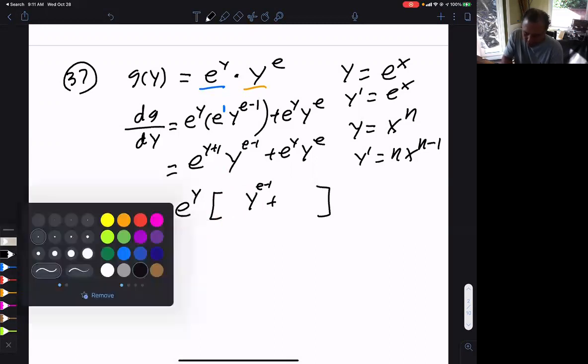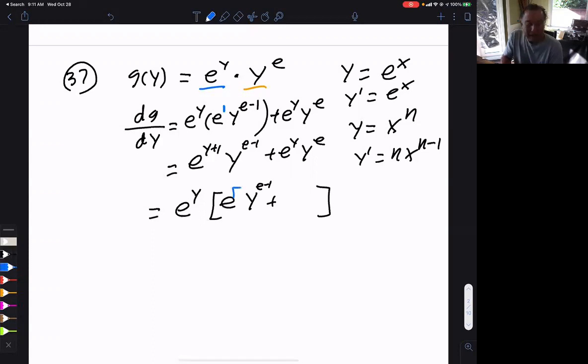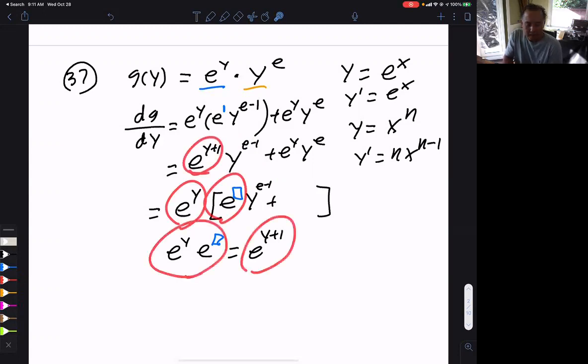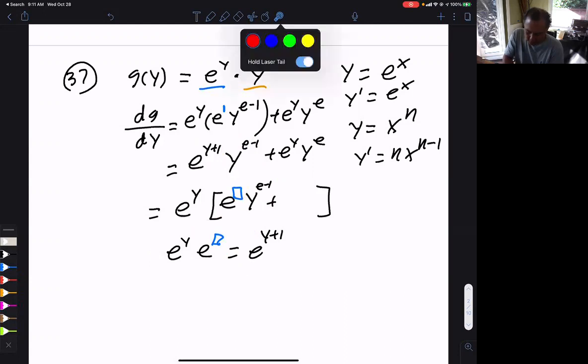But here's a question. I need e to what power? Again, this times this must equal that. Well, that's taken care of. So in other words, e to the y times e to the box must equal e to the y plus 1. That times that must equal that. So those two must equal that. So clearly, what does this box have to be here? Show me with your hands. 1. Because you add exponents, right? So that needs to be 1. So that's going to be a first power there. And we can double check that. Let me erase all this.